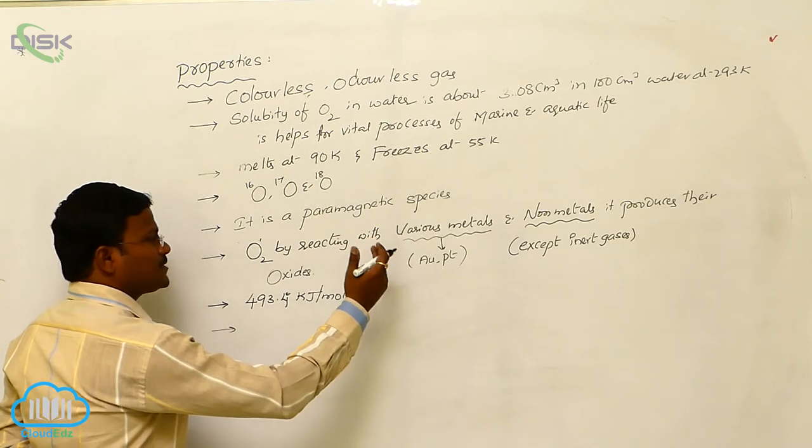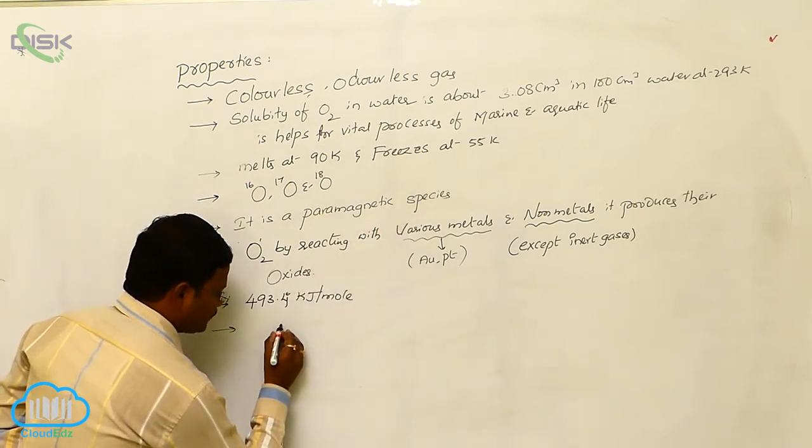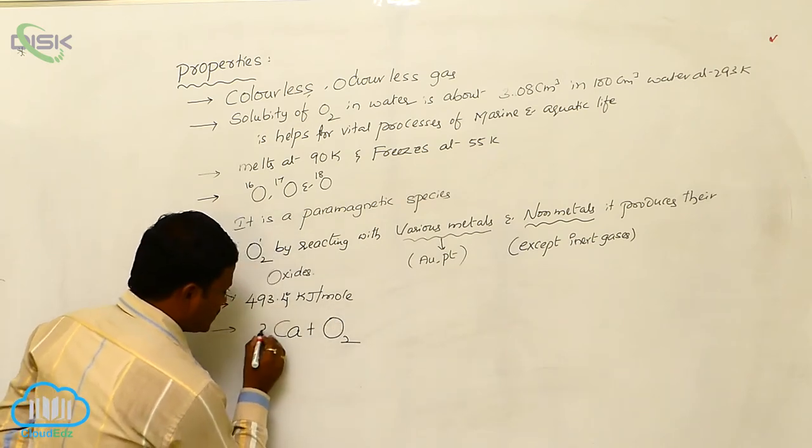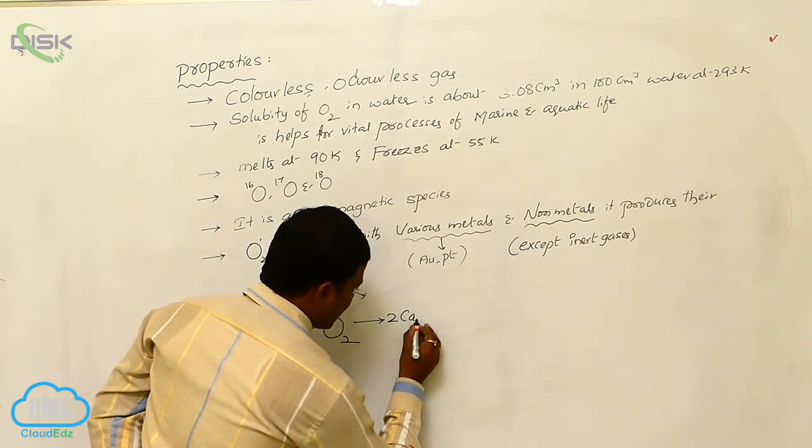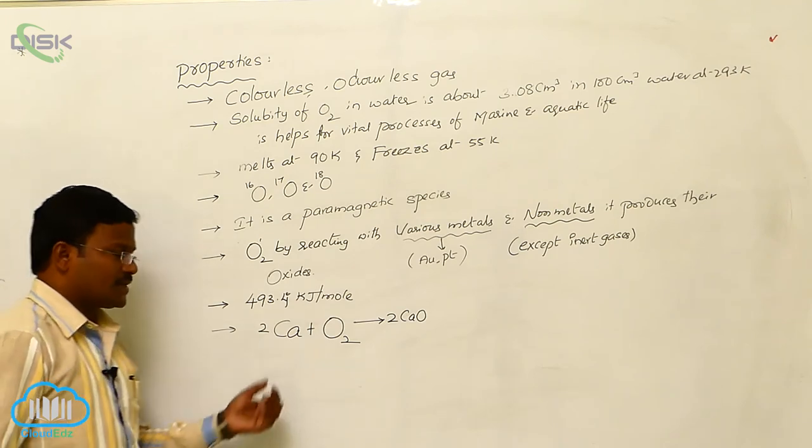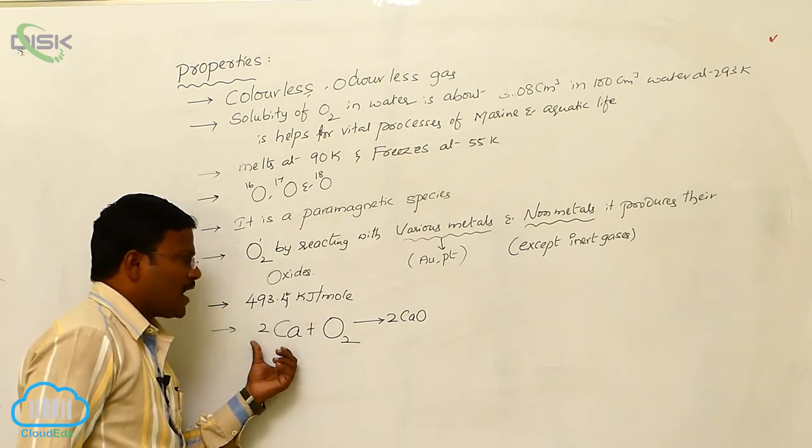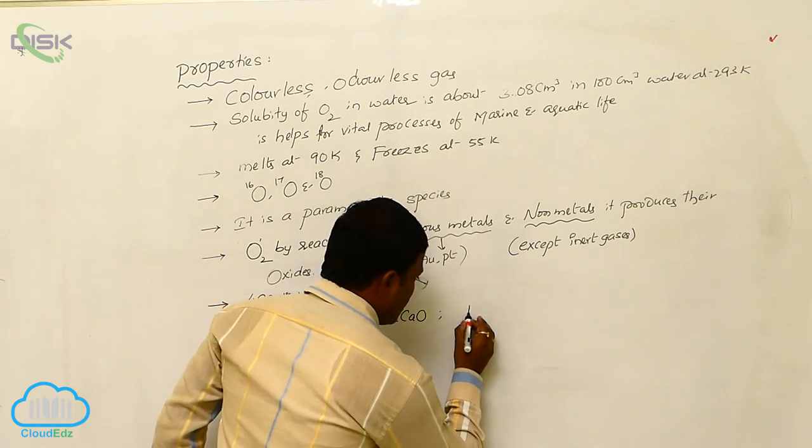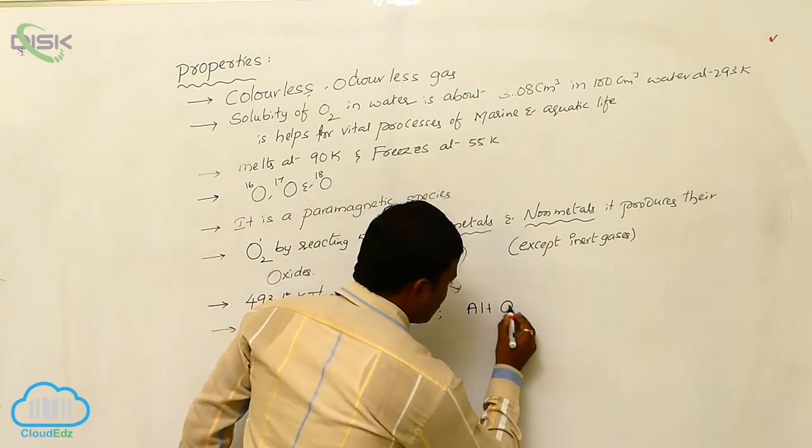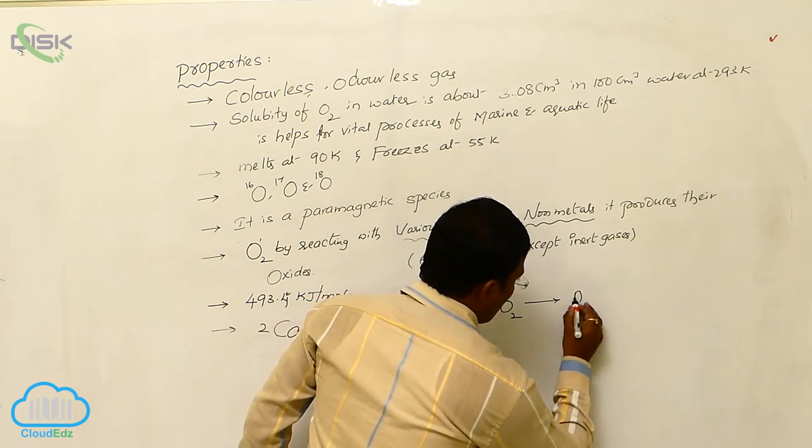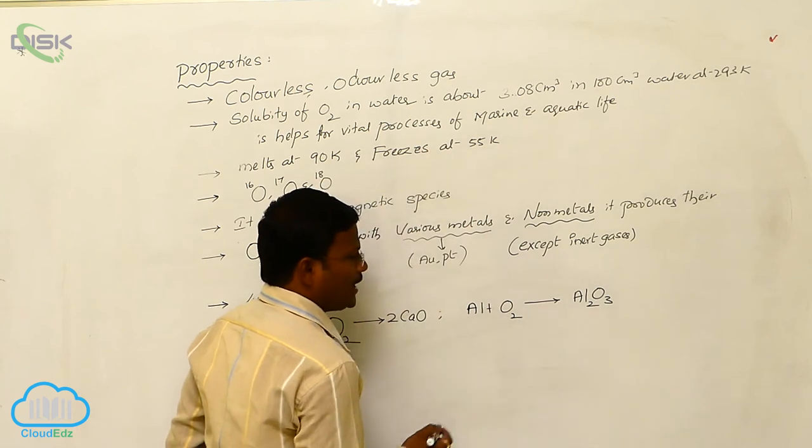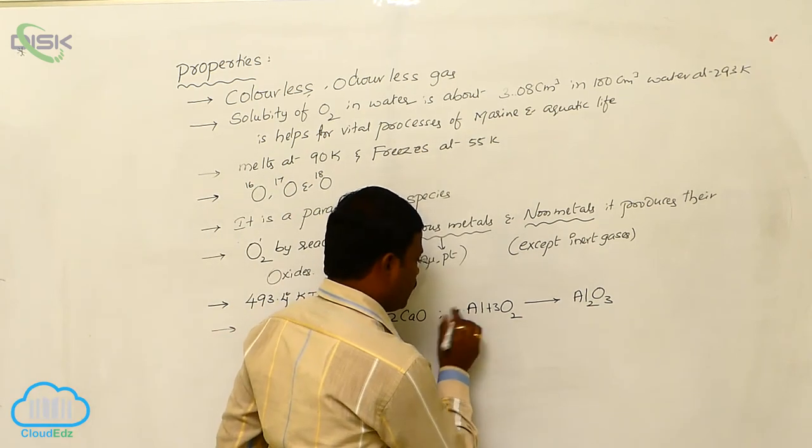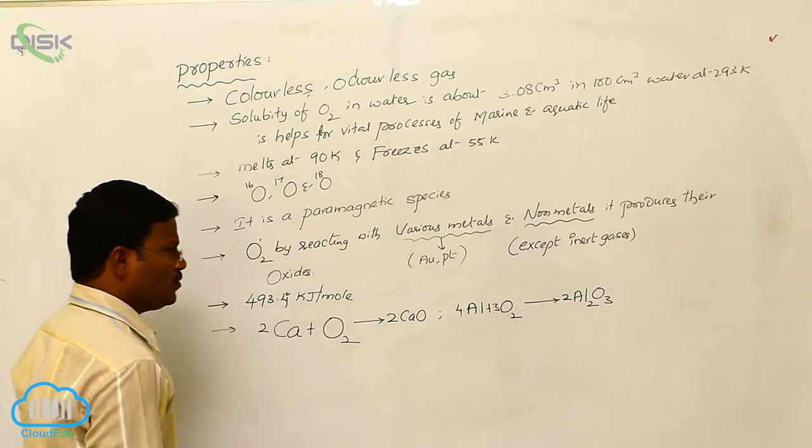Let us have some examples, some chemical reactions which can show how the oxides are resulting from various metals and nonmetals. First, calcium reacts with oxygen and produces calcium oxide. Once again, calcium by reacting with oxygen produces calcium oxide. Similarly, one more reaction: aluminum reacts with oxygen and produces aluminum oxide having the molecular formula Al2O3. 4Al plus 3O2 gives rise to 2Al2O3.